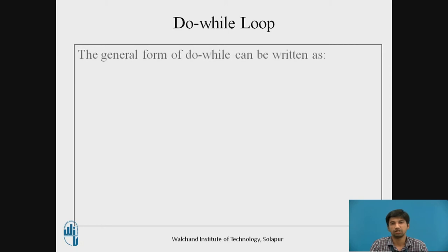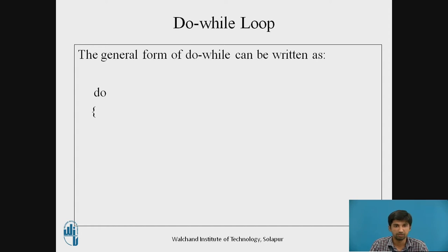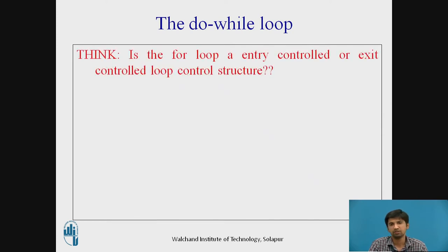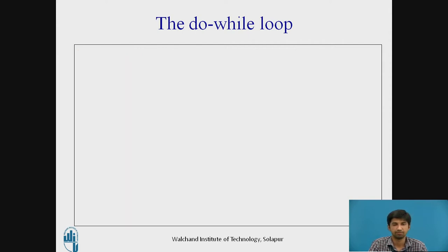The general form of the do-while loop can be written as: do { statements to be executed } while (condition). The body of the loop can consist of operations such as finding the sum of numbers, sum of even numbers, sum of odd numbers, or checking whether a number is a perfect number. Now just pause the video and think — whether the do-while loop is an entry-controlled or exit-controlled loop control structure.